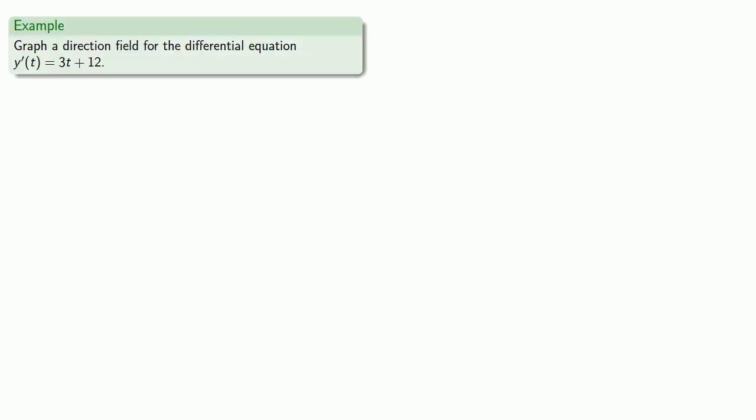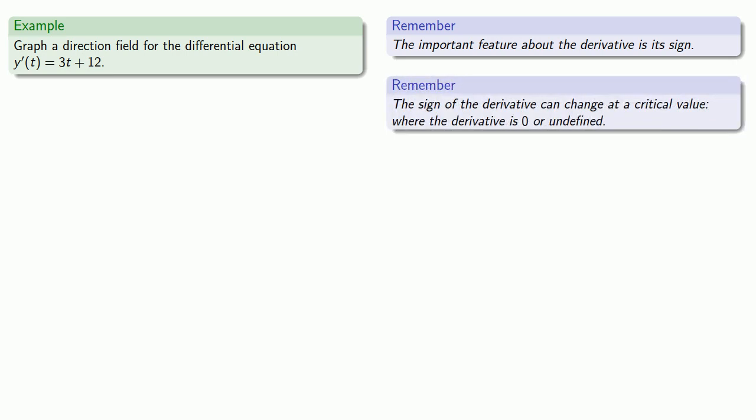Well, let's see how that might work. So let's graph a direction field for the differential equation y prime of t equals 3t plus 12. Remember, the important feature about the derivative is its sign, and that the sign of the derivative can change at a critical value, where the derivative is 0 or undefined. This means the first step is we want to find the critical values, the places where the derivative is 0 or undefined.